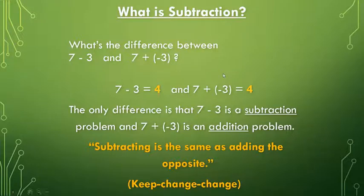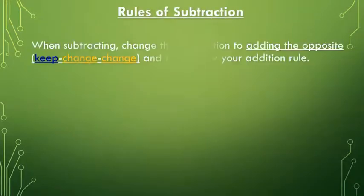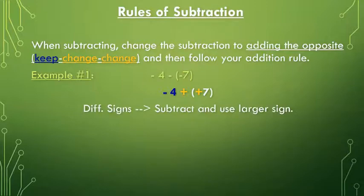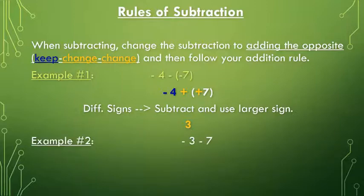When subtracting, we change the subtraction to adding the opposite using keep change change, then follow our addition rules. For example, minus 4 minus minus 7 becomes minus 4 plus positive 7. Since the signs are different, we subtract and use the sign of the larger number, giving us positive 3. For a second example, minus 3 minus positive 7 becomes minus 3 plus minus 7.